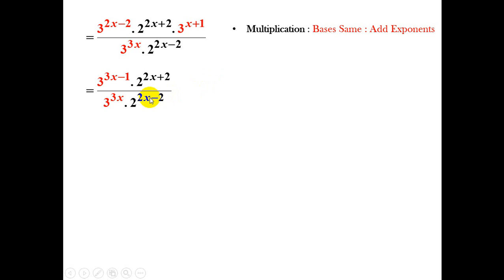Now, if we look at the problem at this stage, we can see that the bases are the same in terms of the red, and the bases are the same in terms of the black. And looking at the laws of exponents for division, if the bases are the same, we subtract the exponents.